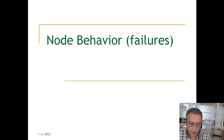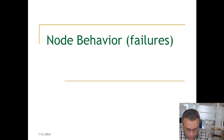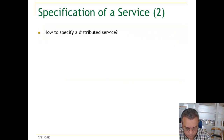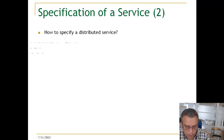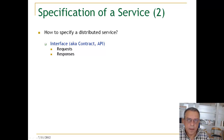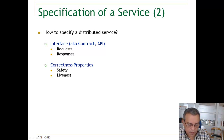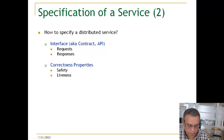We're going to talk now about node behavior and failure models of nodes. Remember, when we specify a service we need to specify the interface, which are request and response of the events, and the correctness properties — the safety and liveness properties that we discussed in the previous section.